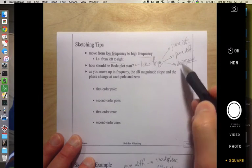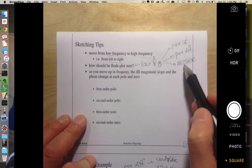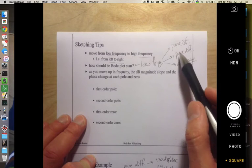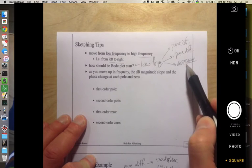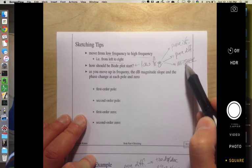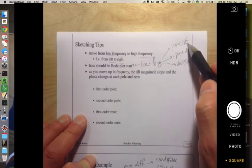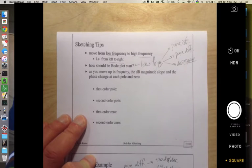Which of those cases you're in determines does my magnitude start out flat with zero dB slope and zero degrees phase, does it start off with plus 90 degrees phase and a positive 20 dB per decade slope, or a minus 90 degrees phase, minus 20 dB per decade slope.